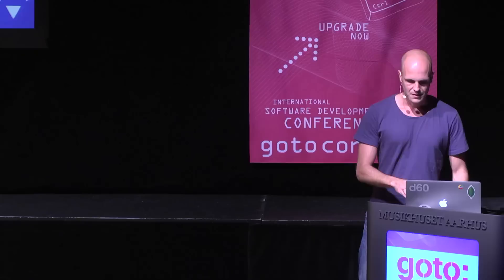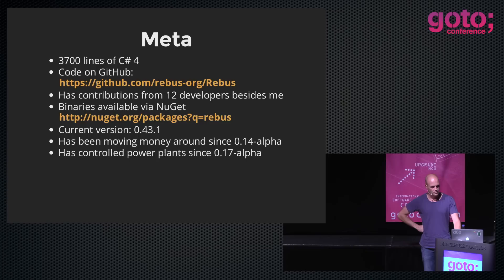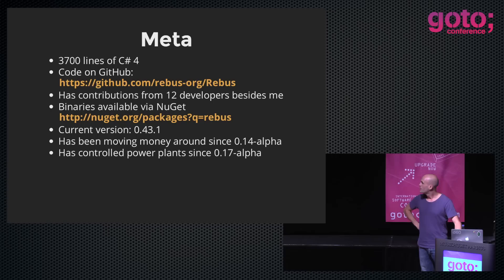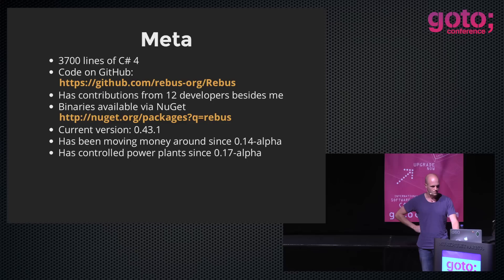I wanted to create Rebus so you could start out using it at the beginning of a project, and then if the project became more serious and you could warrant the licensing cost, you could easily port all your code to NServiceBus. Therefore all the APIs in Rebus are actually stolen from NServiceBus — all the APIs except the configuration API. Right now, it's a fairly small project: 3,700 lines of C# code. The code is on GitHub and has contributions from 12 developers besides me.